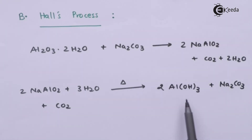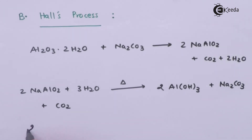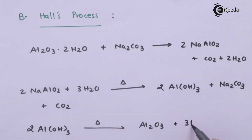In both processes the key intermediate is two moles of Al(OH)₃. In the final step, two moles of Al(OH)₃ is heated to obtain Al₂O₃ along with three moles of H₂O. This is how we obtain alumina from bauxite. Therefore, this was the topic related to leaching of alumina from bauxite using both Bayer's process and Hall's process.